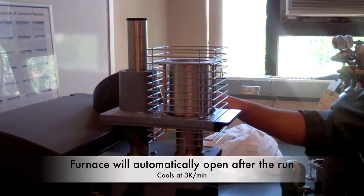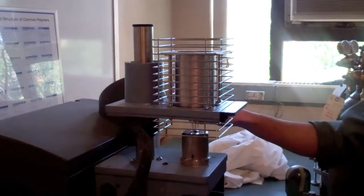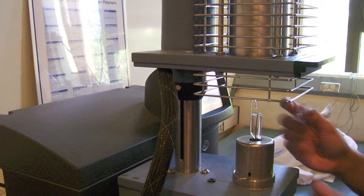After the run is finished, the furnace will automatically open and begin to cool to room temperature. For controlled cooling experiments, note that the TMA does not have a cooling accessory and will cool at about 3k per minute.